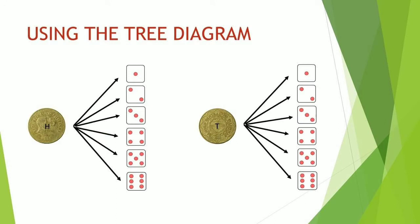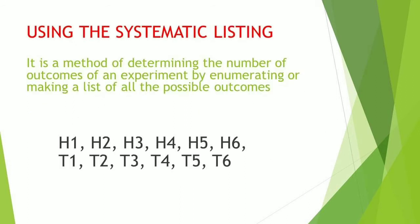And then if we are going to use the tree diagram, as you can see, we have coins and then branches for each face of the die.